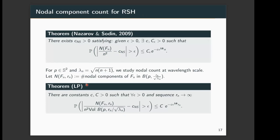There is a lot of interest in studying Laplace eigenfunctions at the wavelength scale. What we do is consider the same random spherical harmonic but at the wavelength scale: we fix a point p in S² (say the north pole) and look at geodesic balls on S² of radius r_n / sqrt(λ_n), where r_n is any sequence tending to infinity. We prove exponential concentration for the count of nodal components contained in this small geodesic ball around the same positive constant. This can be viewed as a local version of Nazarov and Sodin's result. Thank you very much for your attention.